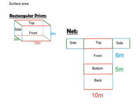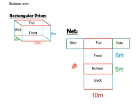Today we're going over surface area. If you see here, we have a rectangular prism. If we were to cut that along some of the sides and lay it flat, we would have this shape here, which is called the net.